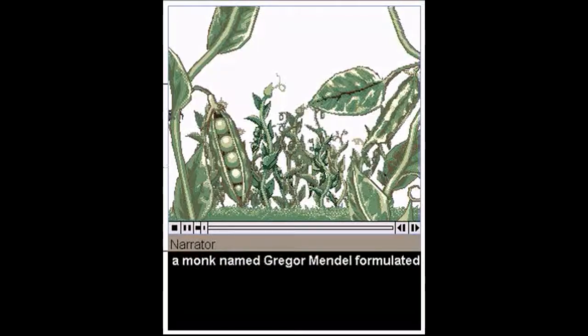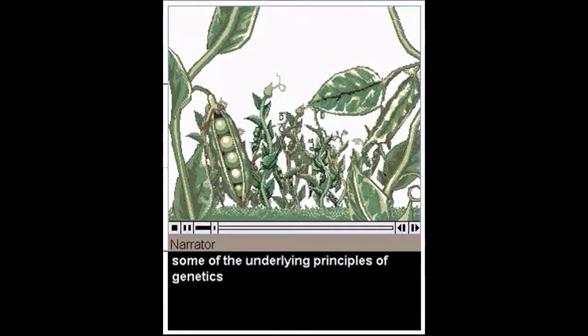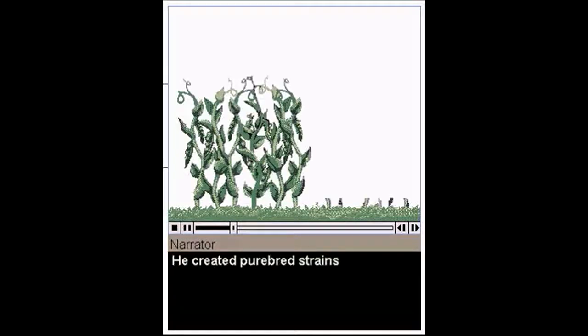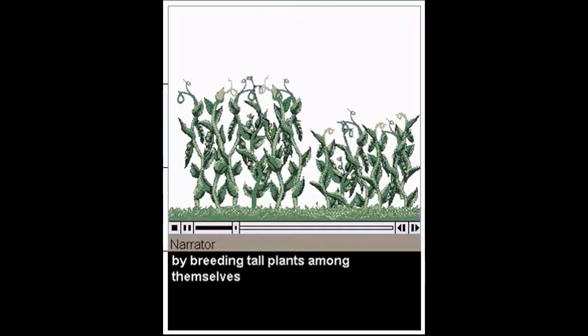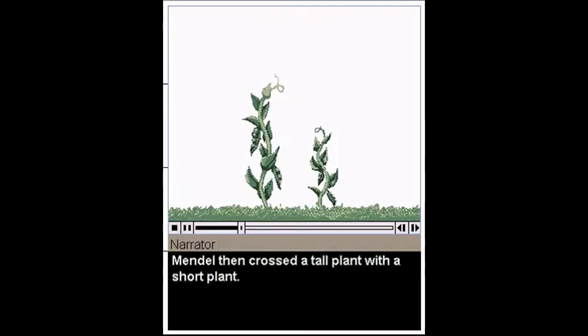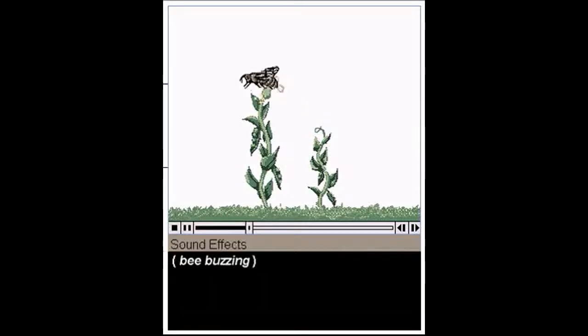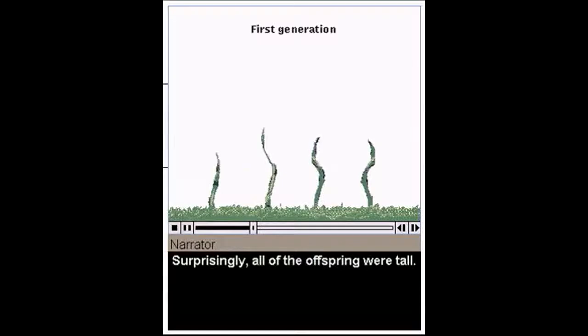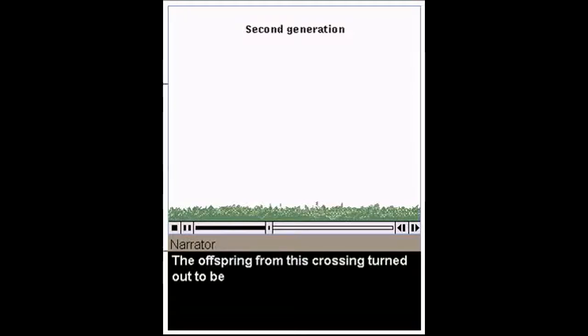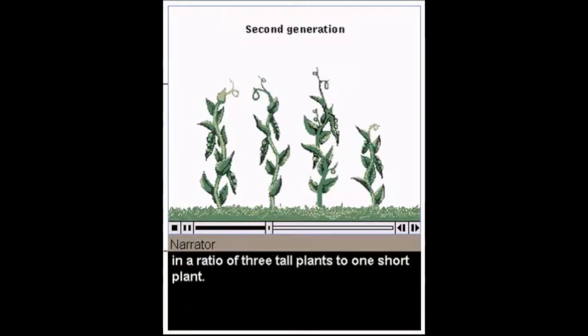In the mid-1800s, Austrian monk Gregor Mendel formulated some of the underlying principles of genetics through his observations of pea plants. Mendel noted that the plants were either tall or short. He created purebred strains by breeding tall plants together and short plants together. Mendel then crossed a tall plant with a short plant. Surprisingly, all of the offspring were tall. Mendel then tried crossing two of these tall offspring. The offspring from this crossing turned out to be in a ratio of three tall plants to one short plant.